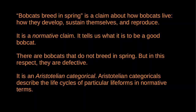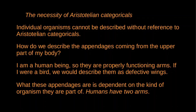A crucial point here is that, according to Foot, we can't describe the activities of any individual organism without reference to these Aristotelian categoricals, to these normative judgments about the kind of thing it is. Think about this: how would you describe the appendages coming from the upper portion of my body? Since I'm a human being, you would take them to be properly functioning arms. If I were a bird, you would instead take them to be defective wings that do not perform their functions properly. The nature of these appendages - what they are - is not intrinsic to them, but is dependent on the kind of organism they are part of. The Aristotelian categorical is 'humans have two arms,' and it's on the basis of these Aristotelian categoricals that we can say the appendages coming out of my body are properly functioning arms.